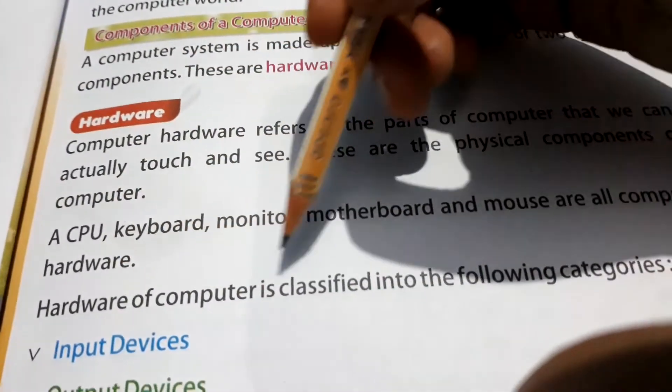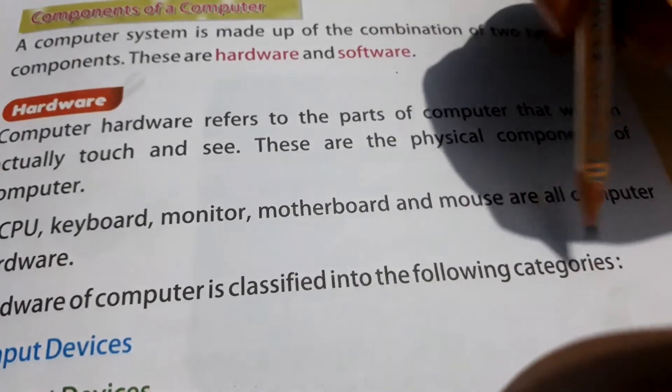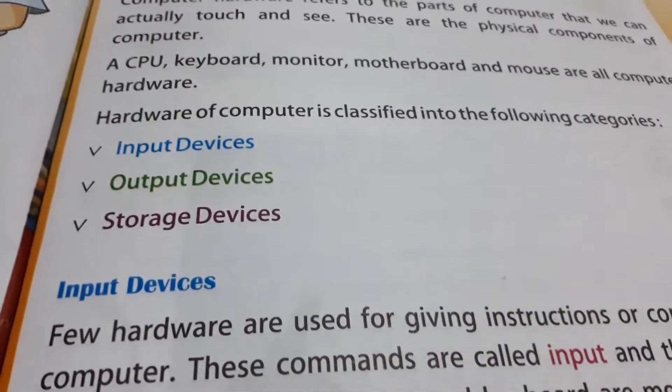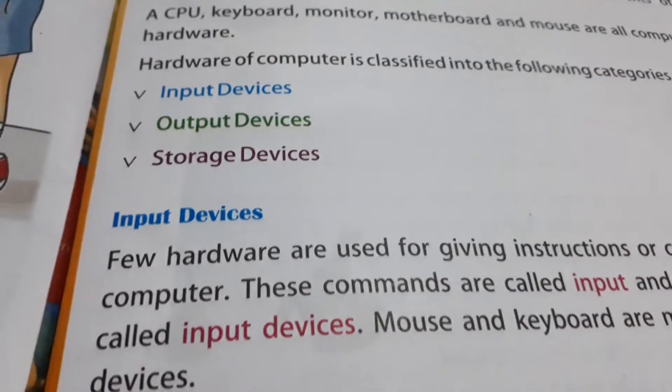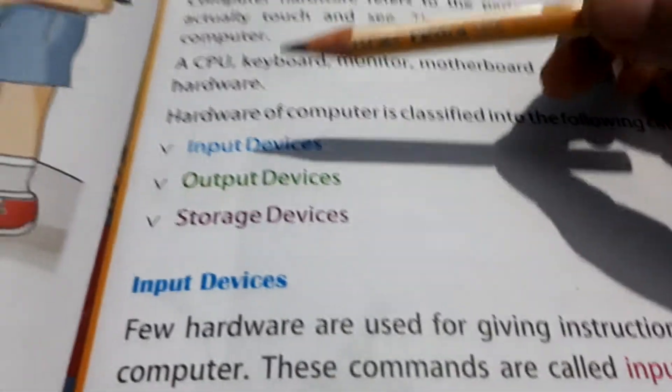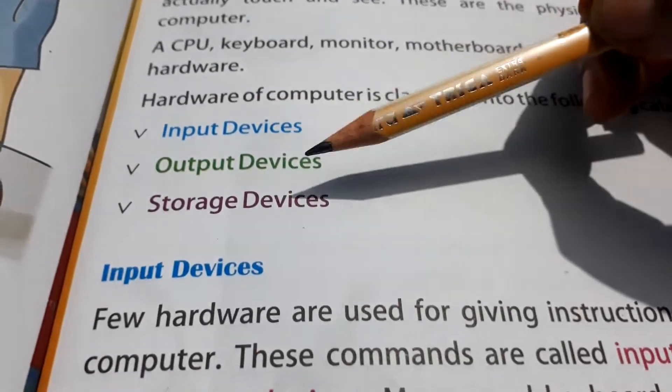Hardware of computer is classified into the following categories. Now here we have some categories. First is input device, output device and storage device. In the back chapter, we already discussed about input and output device.